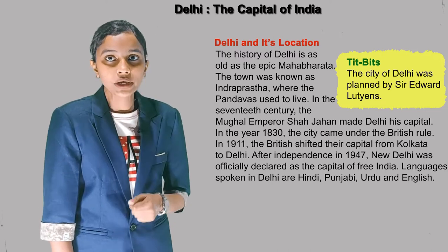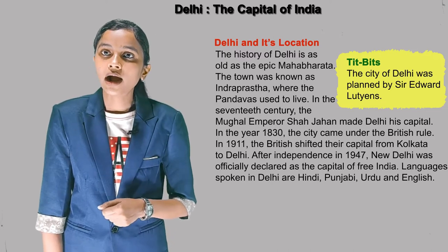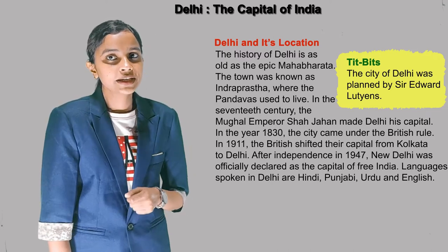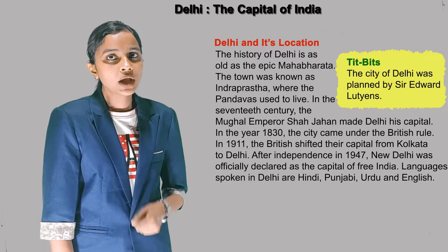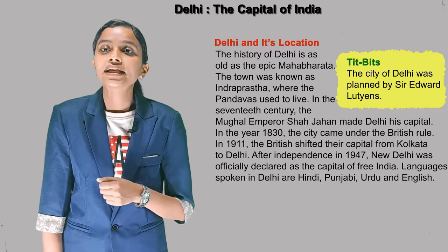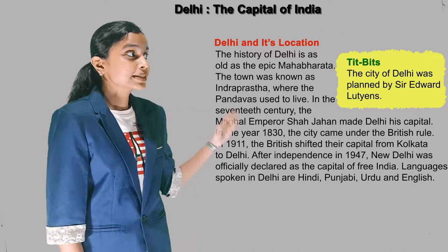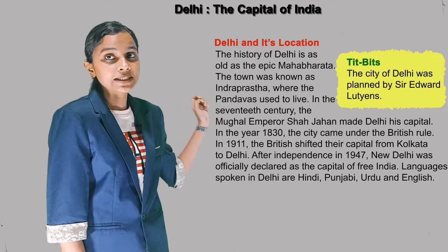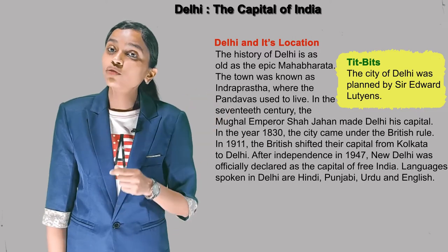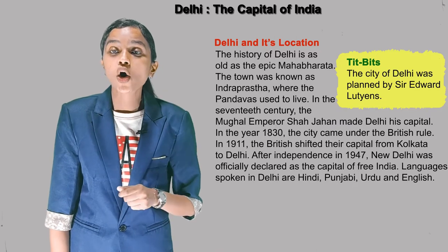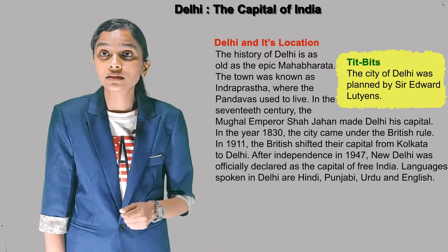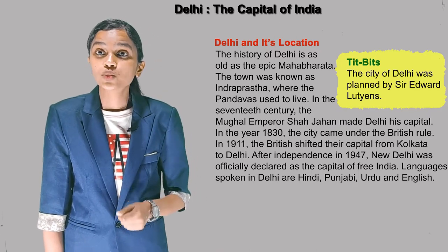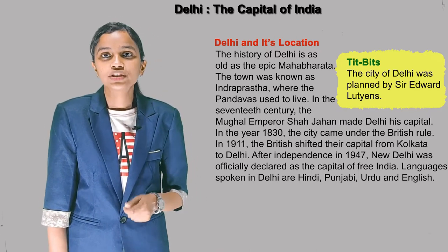Languages spoken in Delhi are Hindi, Punjabi, Urdu and English. Tit and bits: the city of Delhi was planned by Sir Edward Lutyens.